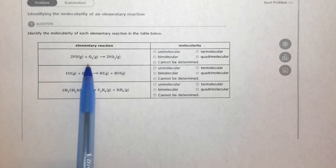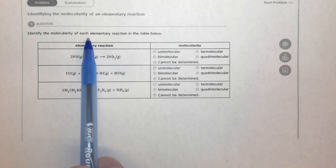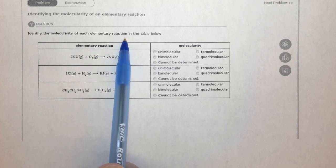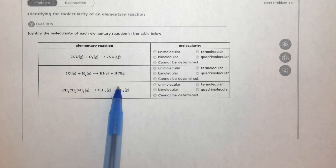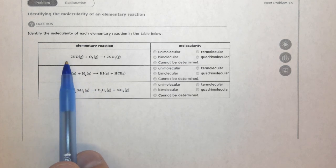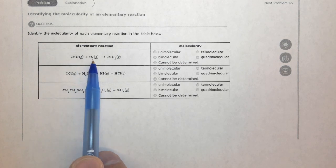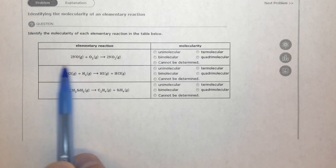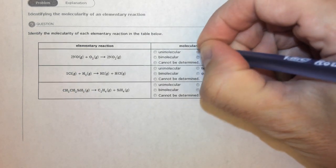As far as solving this problem, since these are elementary reactions, you literally just have to count how many reactants there are. So there's two NOs, that's two, plus one O2, that's three. If there's three things, it's termolecular.